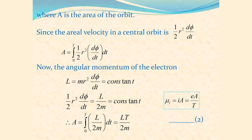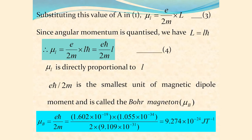Since mu_L = EA/T, substituting A = LT/2m, the T's cancel, and the final expression for orbital magnetic moment is mu_L = (E/2m) × L, where E is the charge of the electron, m is the mass of the electron, and L is the angular momentum, which is quantized and given by l·ħ, where l is the angular momentum quantum number. So mu_L = (Eħ/2m) × l.